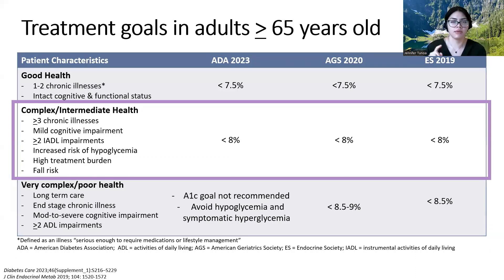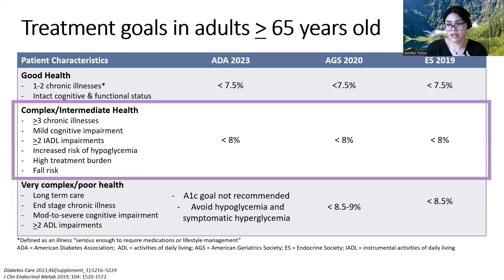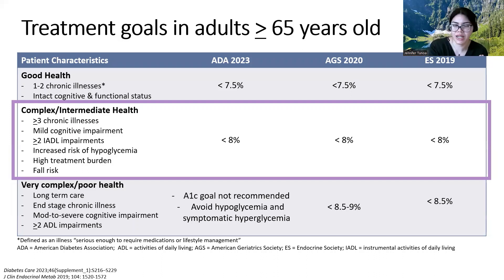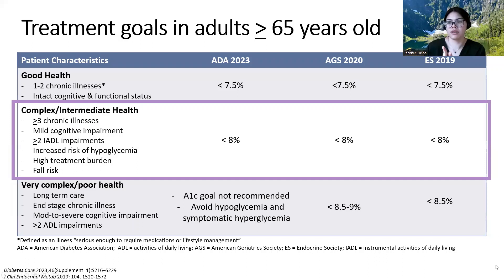Symptomatic hyperglycemia means being super tired all the time, being really thirsty, having to pee all the time, and the consequences of hyperglycemia — hospitalizations for DKA or HHS, and delayed wound healing. That's more of what we're trying to accomplish rather than needing to get your A1C below a certain percentage. Most often folks will fall in the complex intermediate health category.